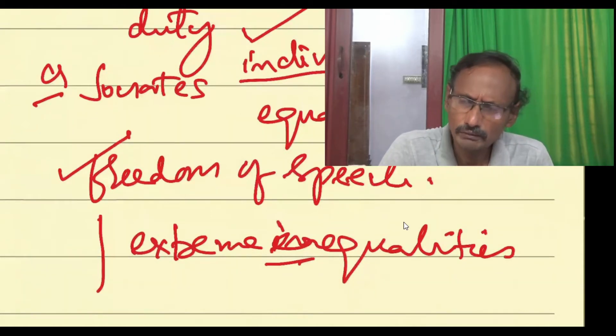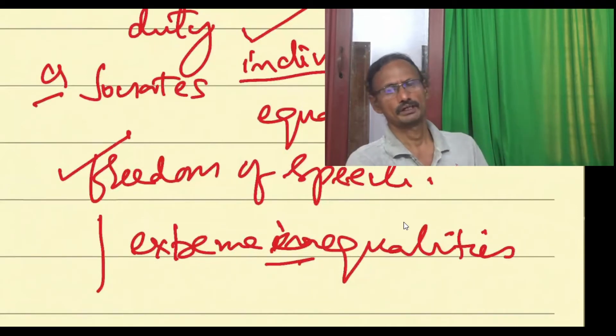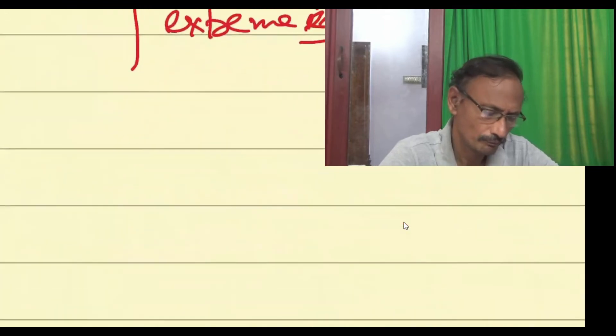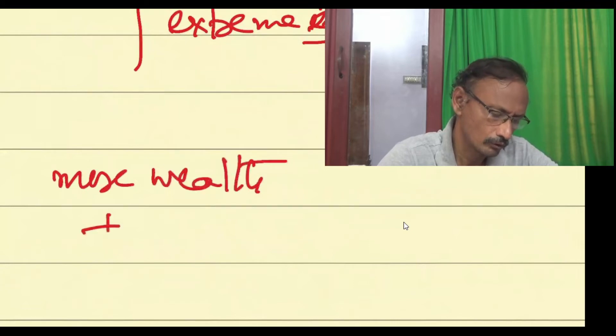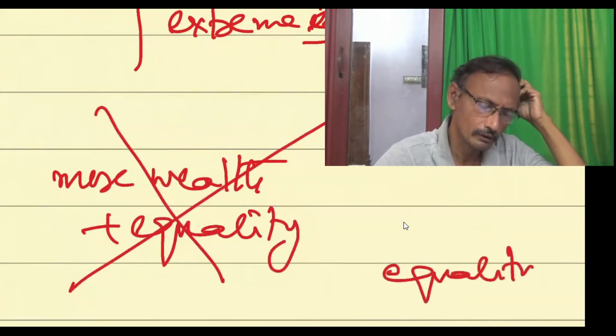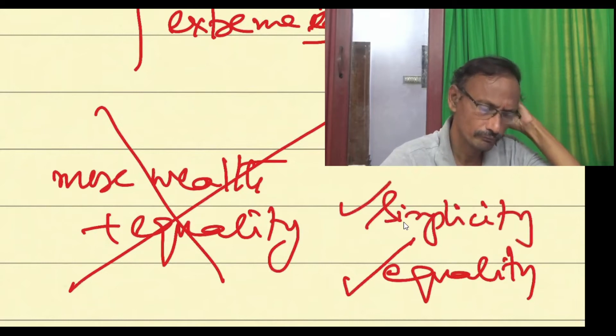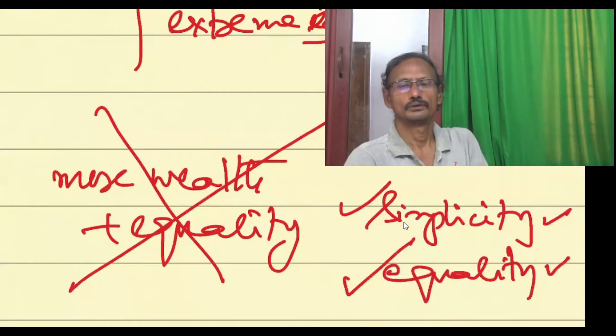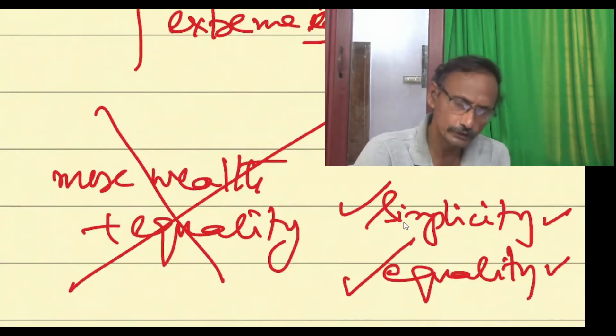To Gandhi, equality is nothing but satisfaction of basic needs to everybody. Gandhi is not for wealth plus equality. Gandhi is for equality and simplicity. He thinks that simplicity and equality will go along, and it is such a political system that one has to work for.